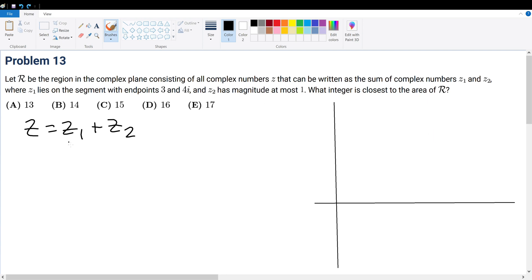It goes from 3 to 4i. So in the complex plane, this is the real axis, this is the imaginary axis. So a line that goes from 3 to 4i would probably look something like this. If I use the line tool, it would look something like this.